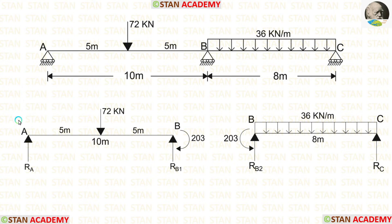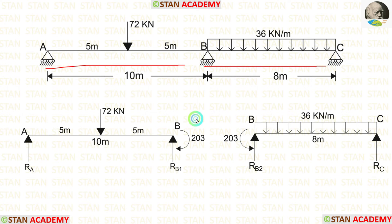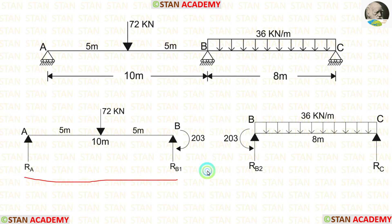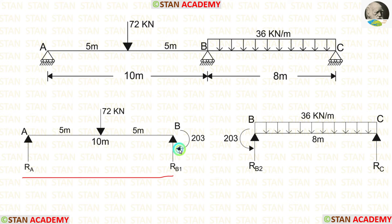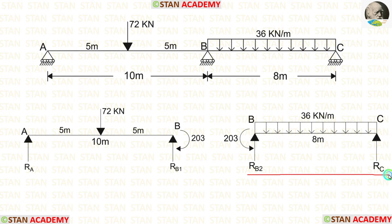Now let us calculate the reactions. In this beam, we are having two spans — span AB and span BC — so we have to split the beam into two parts. In span AB, the moment MB will be acting in the clockwise direction. For span BC, the moment will be acting in the anticlockwise direction.